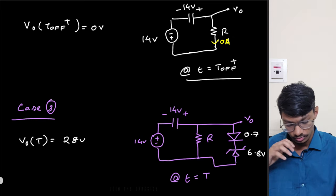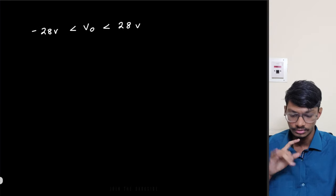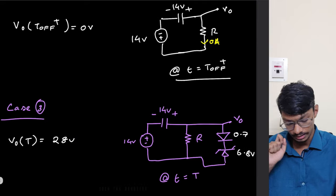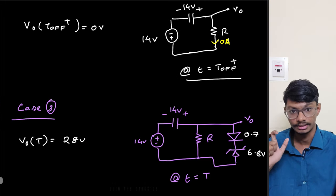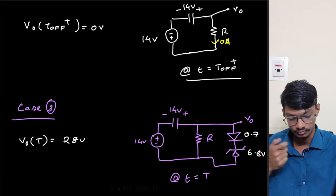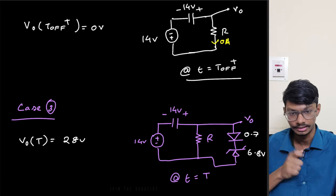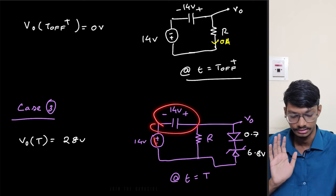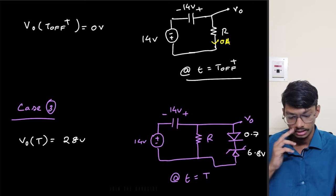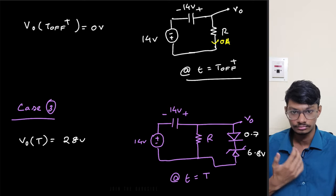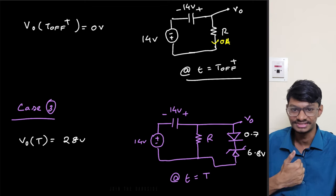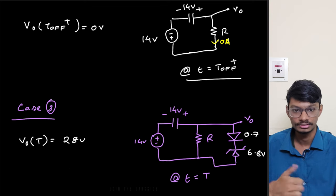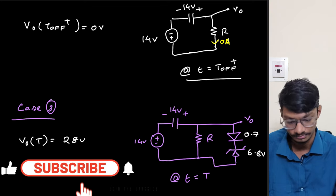That's the answer to this question. As a homework exercise, plot the output voltage waveform and compute the area of the impulses occurring at each transition. If you liked the video, please hit the like button, and if you want more content like this, subscribe to my channel. Thank you.